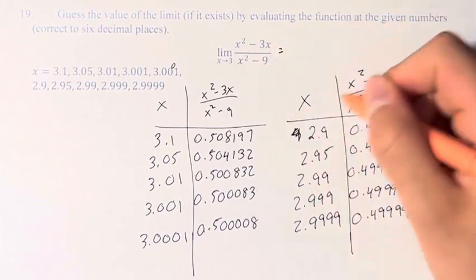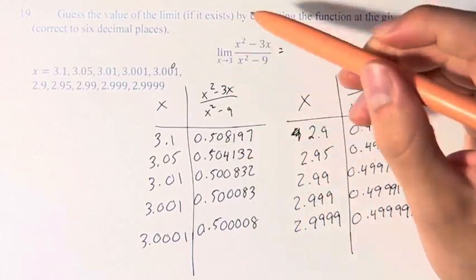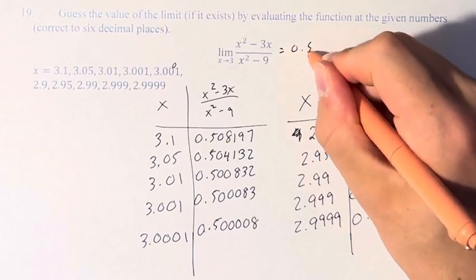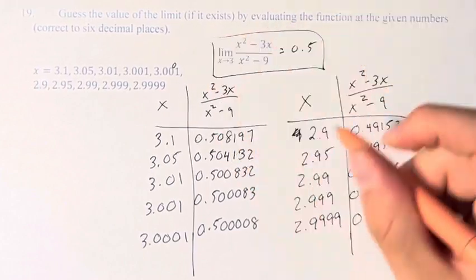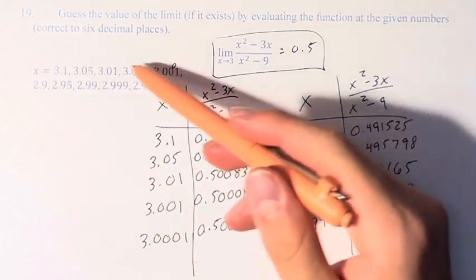Therefore, we can say that the limit, just by guessing, but with high likelihood, as x approaches 3 of x squared minus 3x over x squared minus 9 is equal to 0.5. Based on these values that we tested, as x is approaching 3.